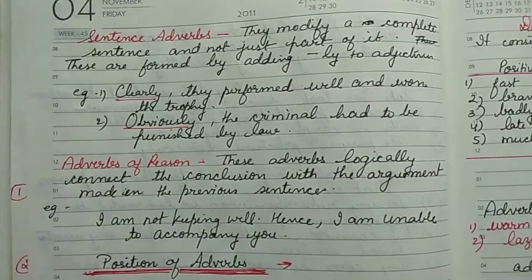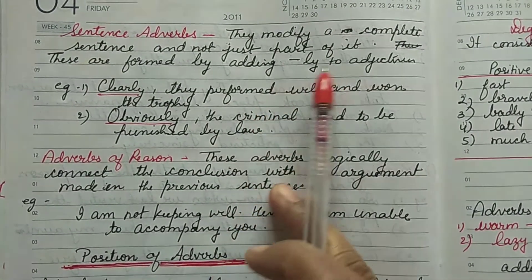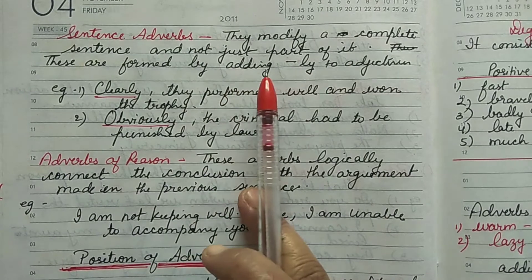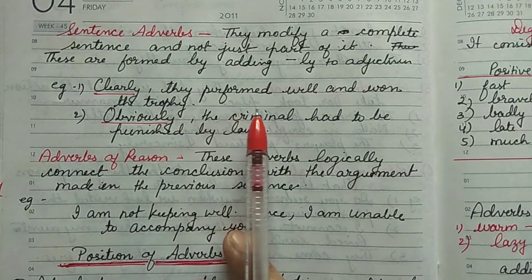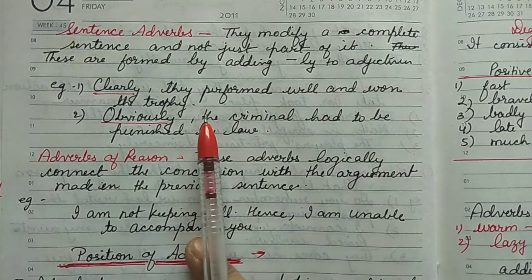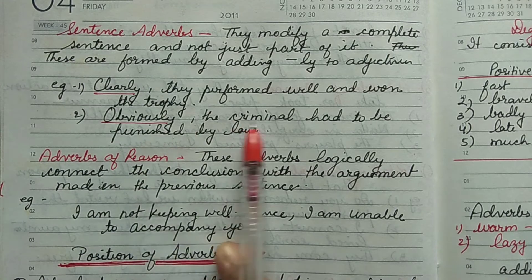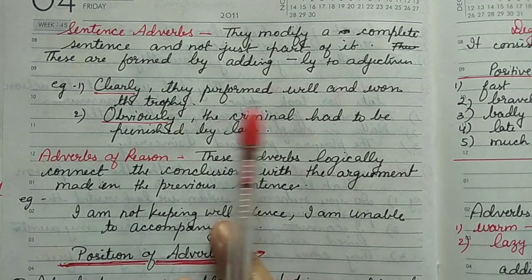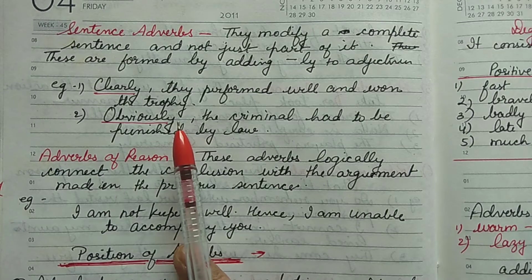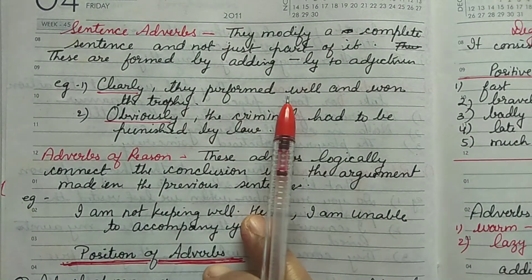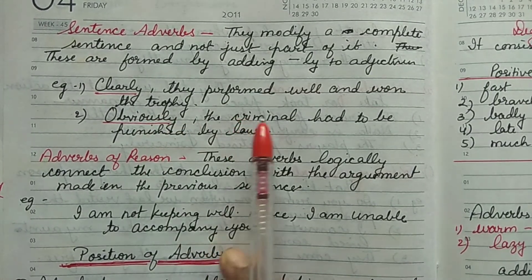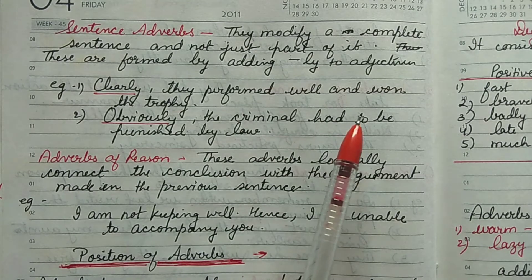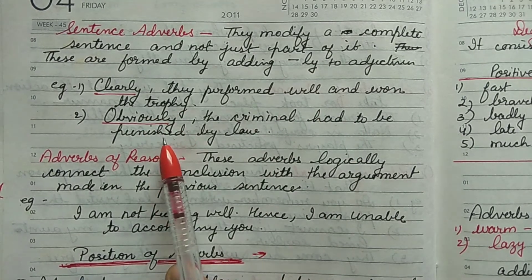Next is sentence adverb, which modifies a complete sentence and not just part of it. These are formed by adding -ly to an adjective. Examples: 'Clearly, they performed well and won the trophy.' 'Obviously, the criminals had to be punished by law.' The words clearly and obviously modify the entire statement, not just a part of it — these are sentence adverbs.